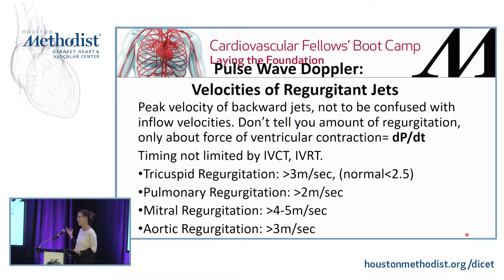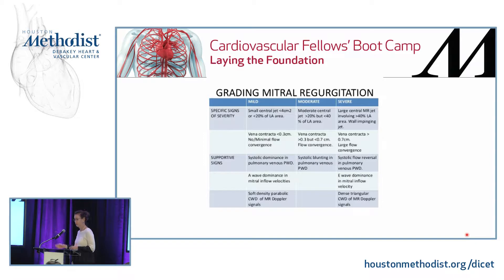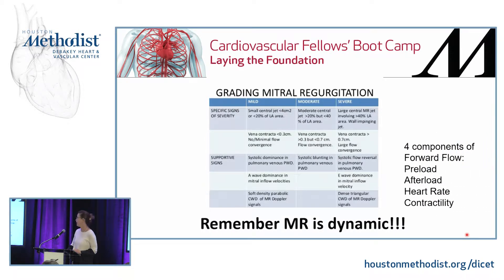Tricuspid regurgitation in the presence of a functioning, good ventricle is going to be about 3 meters per second. Pulmonary regurgitation is about 2 meters per second. Mitral regurgitation can be over 4 to 5 meters per second, and aortic regurgitation is greater than 3. For grading of mitral regurgitation, we usually say mild, moderate, and severe, using jet velocity, vena contracta, and supportive signs for whether this is chronic or acute. Always remember that MR is dynamic and influenced by the four components of forward flow: preload, afterload, heart rate, and contractility. You can manipulate these variables to make moderate MR appear mild or mild MR appear moderate.